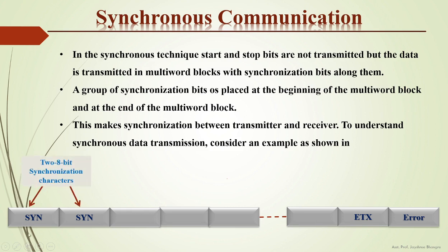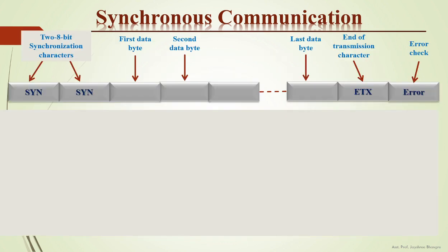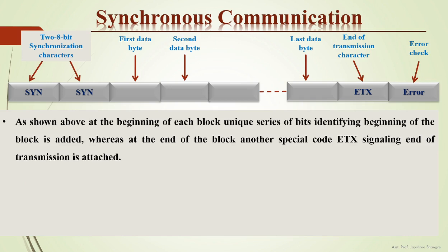The two blocks shown are two 8-bit synchronization characters used for synchronization. Then comes the first data byte, the second data byte, and so on — with multiple data bytes transmitted at a time. At the end is the end-of-transmission (ETX) character. If there is an error during transmission, an error check block is added to the frame. At the beginning of each block, a unique series of bits identifying the start of the block is added, while at the end, the ETX code signals end of transmission.